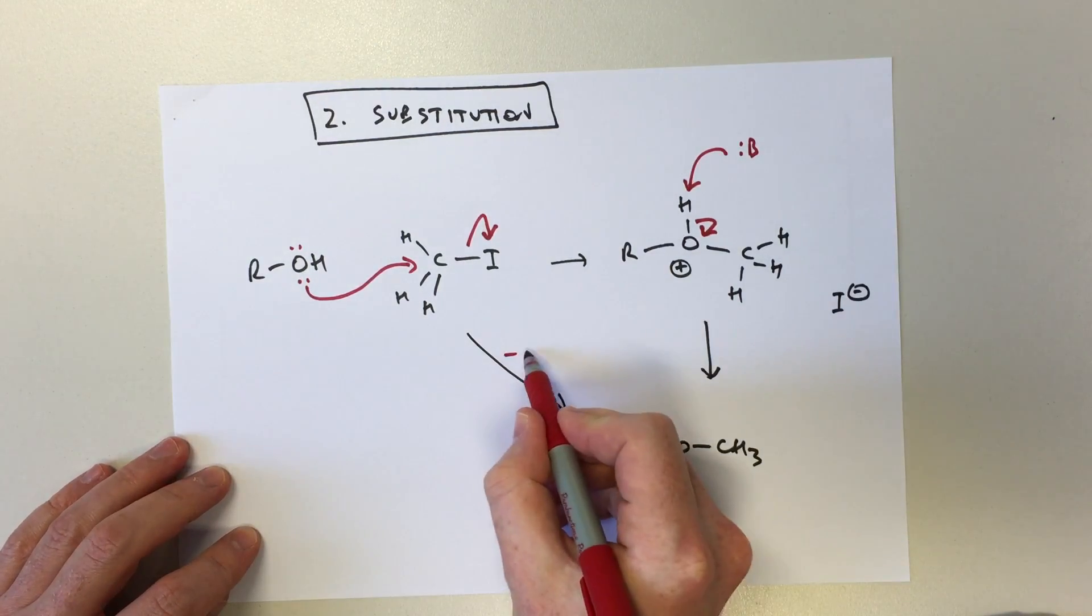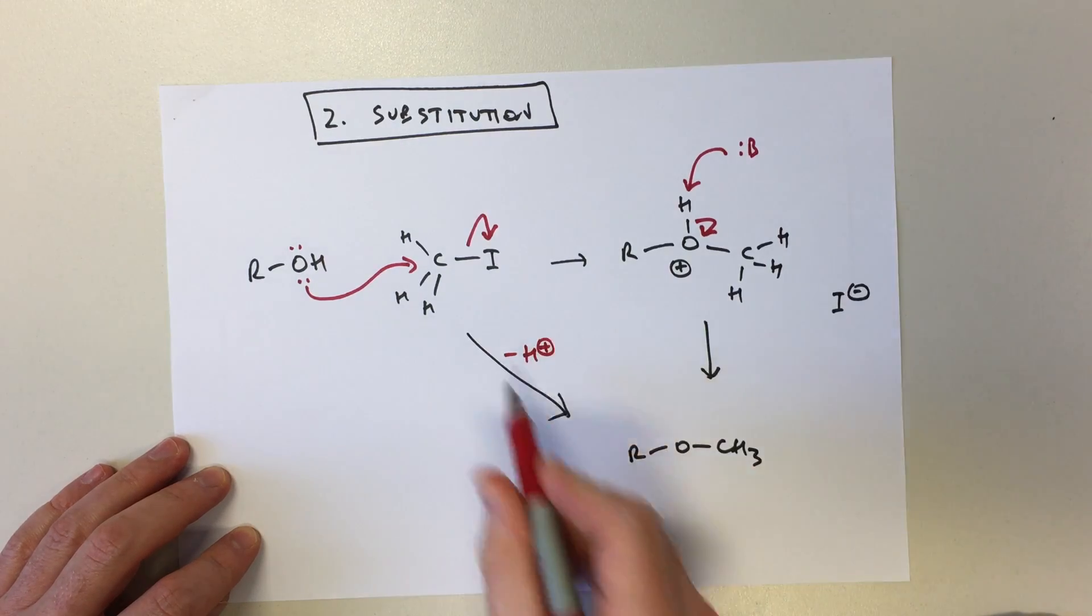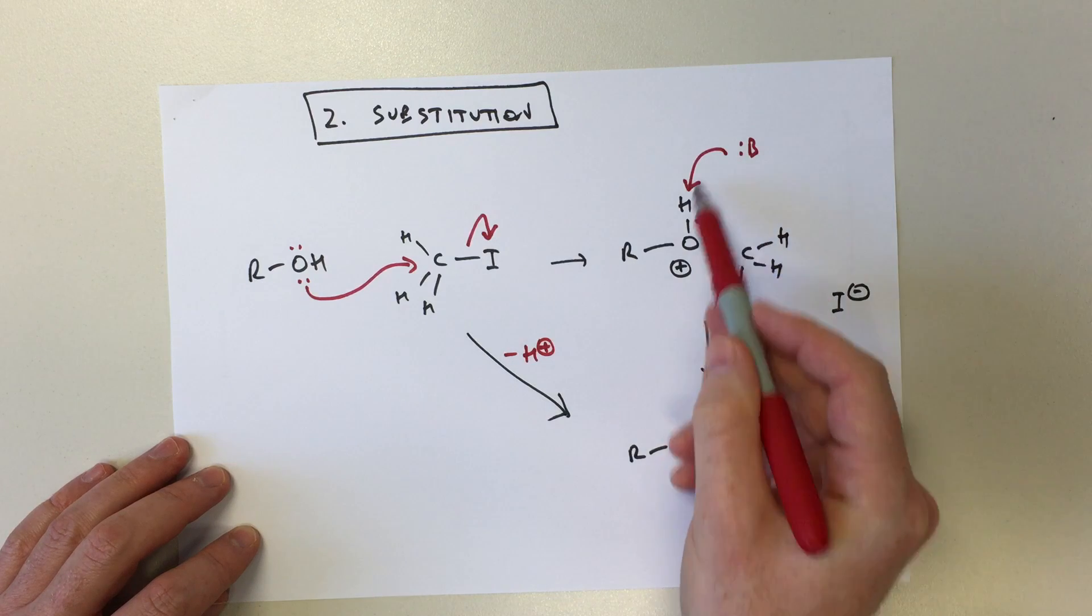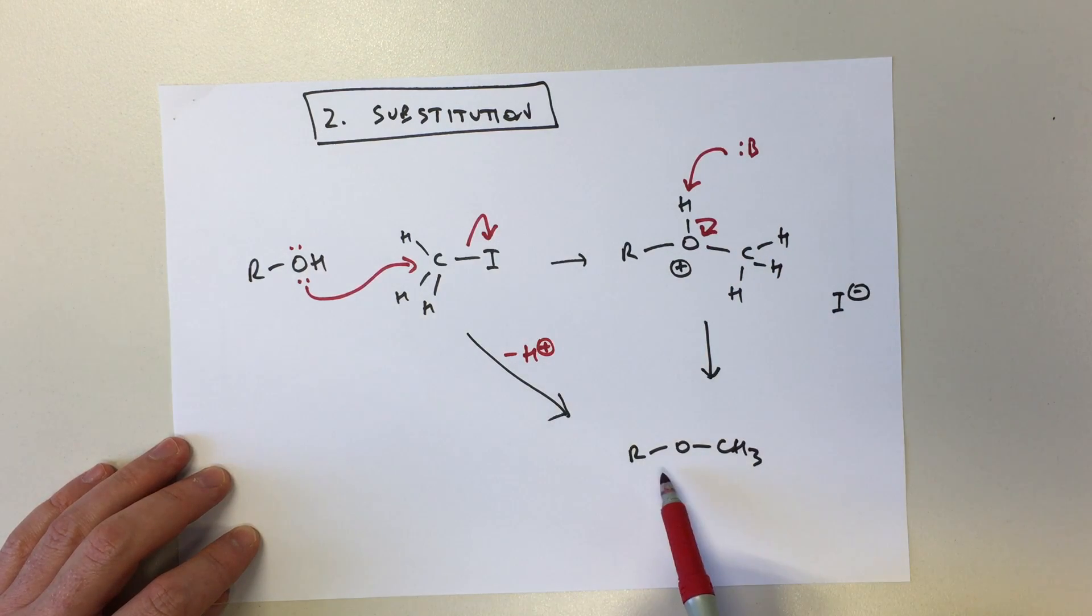Just tell me you know what's going on and write a little minus H plus to just to tell me as I'm marking the exam that you understand that there's been a boring acid-based process to get you straight to here.